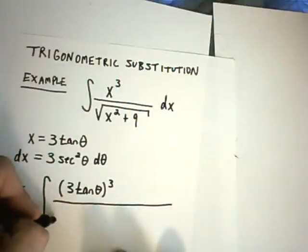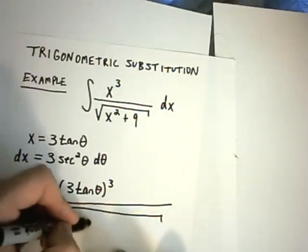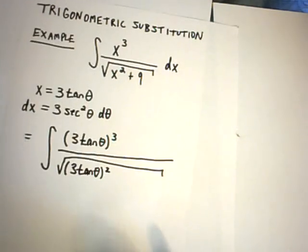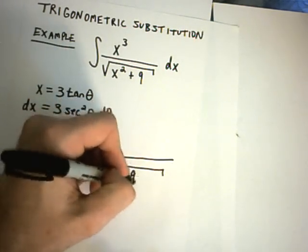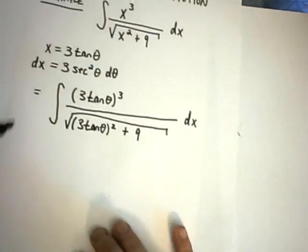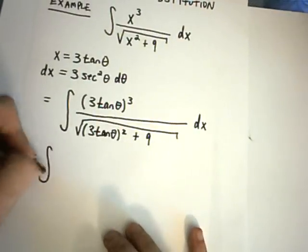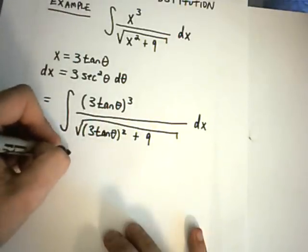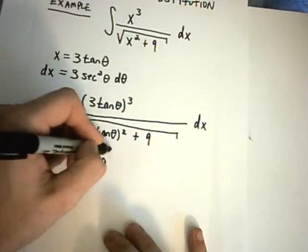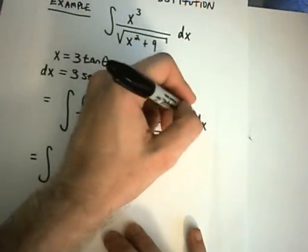This is all going to be divided by, well, 3 tangent theta squared. That's what I'm plugging in for x. Then I still have my plus 9 hanging out over here. And from there, I just need to simplify this integral down a little bit. So, 3 cubed is going to be, I'm just even going to leave it alone. 3 cubed, I'm lazy, tangent cubed of theta.